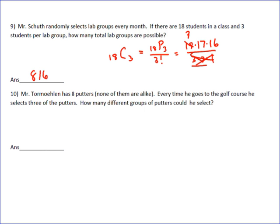Okay, number 10 says Mr. Tormelon has 8 putters, none of them which are alike. Every time he goes to the golf course he selects 3 of those putters at random. So how many different groups of putters could he select? So again, this problem is like number 9. We're just selecting groups of putters.